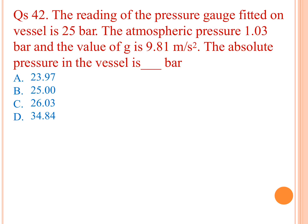The reading of pressure gauge fitted on a vessel is 25 bar, atmospheric pressure is 1.03 bar, and g = 9.81 m/s². The absolute pressure in the vessel is: P_absolute = P_gauge + P_atmospheric = 25 + 1.03 = 26.03 bar. C is the answer.